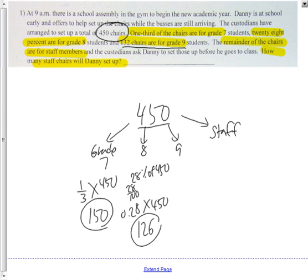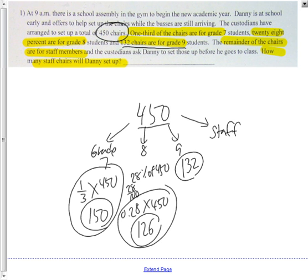132 chairs are for grade 9, there's no math, just write it down. You should have this math somewhere, this math somewhere, and the 132. The next thing is to add all of those up and you get 408 chairs.